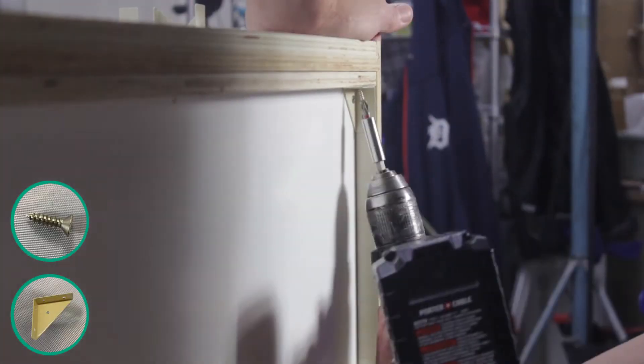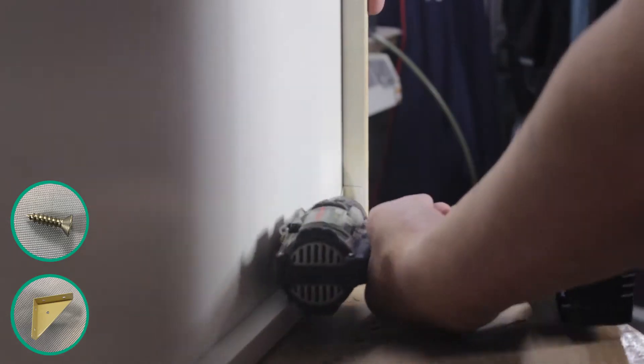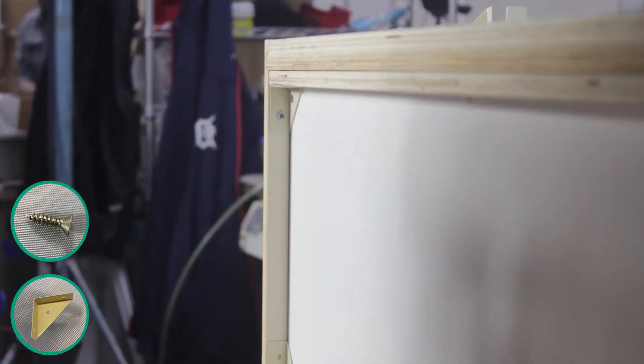Now place a corner bracket into each corner of the top and bottom to firmly secure the cabinet together. Each bracket will be fastened down using three screws.